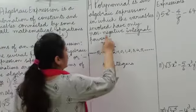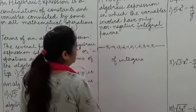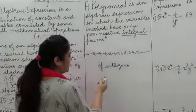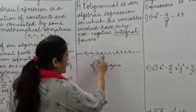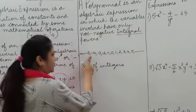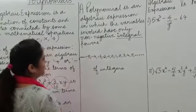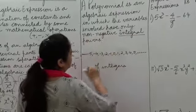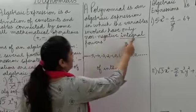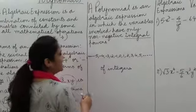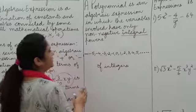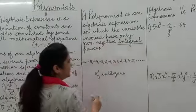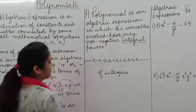Now, what are negative integers? All the integers that lie to the left of 0 are called negative integers. Now, what are non-negative integers? Non-negative integers are integers that are not negative.